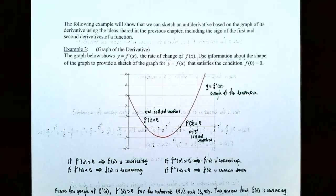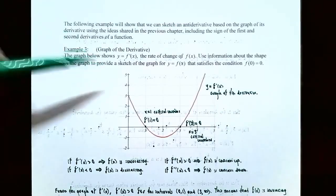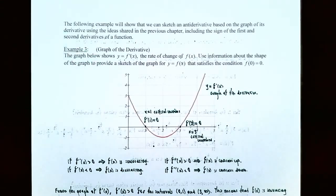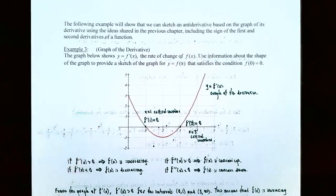Let's finish up this video with an example where we are asked to find what the graph of the original function looks like if we are given the graph of the derivative. We want to sketch the graph of an antiderivative based on the graph of the derivative using ideas from the previous chapter including increasing, decreasing, concave up, and concave down. Example three: graph of the derivative. The graph below shows y equals f prime of x, the rate of change of f of x. Use information about the shape of the graph to provide a sketch of y equals f of x, satisfying f of 0 equals 0.